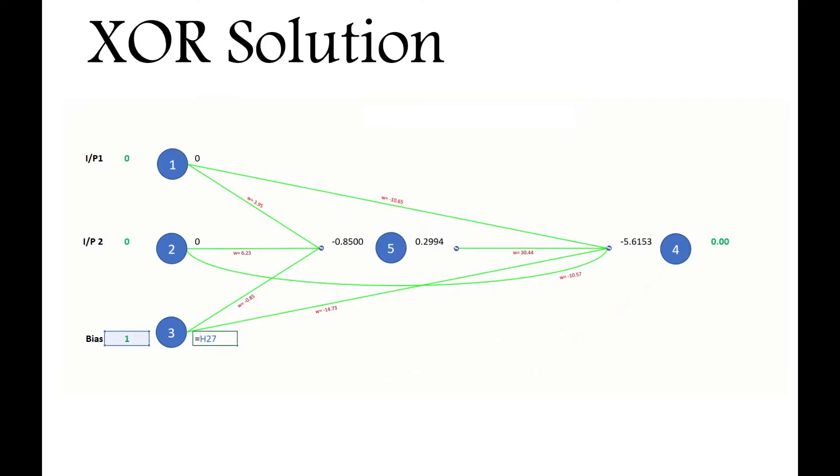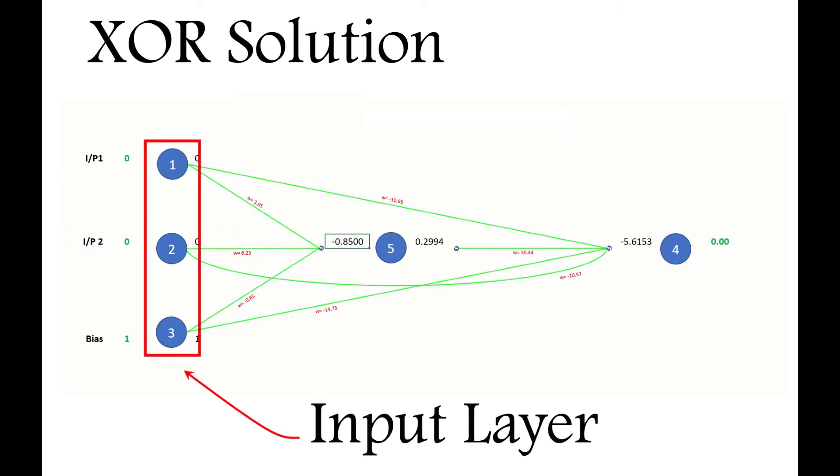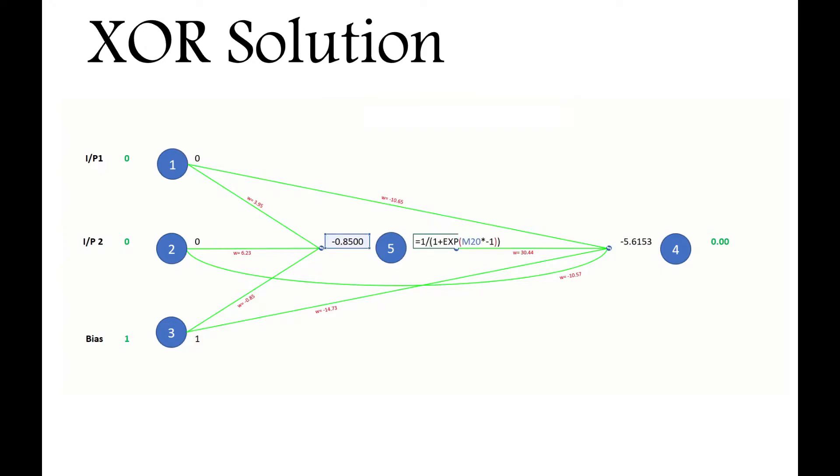As always, when running the network, we start by loading the inputs for each node, and as we have no recurrent connections, and as no activation function is applied to the input layer, the input can simply be copied to the output register for each of the nodes.